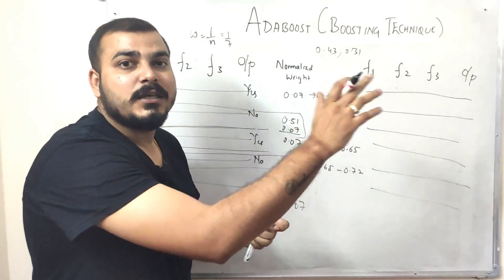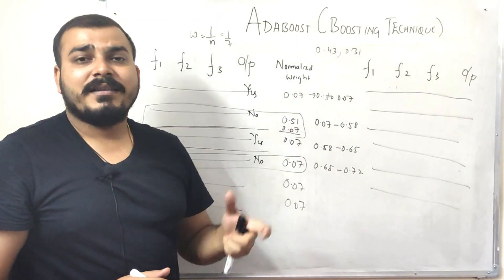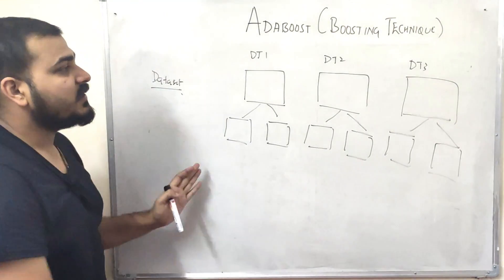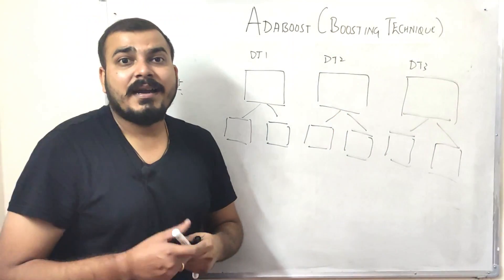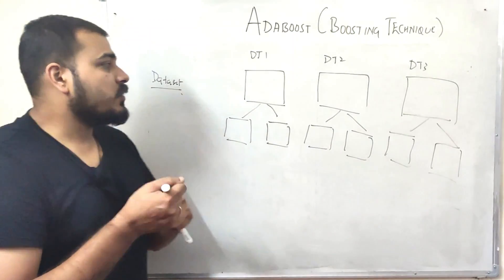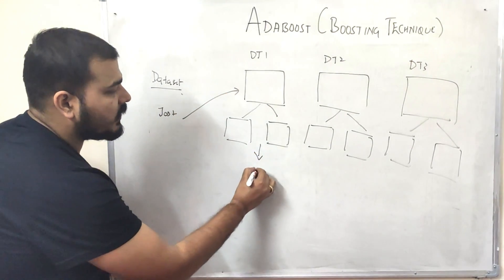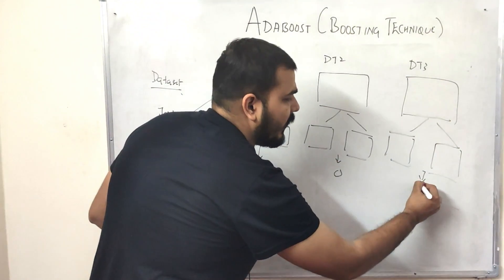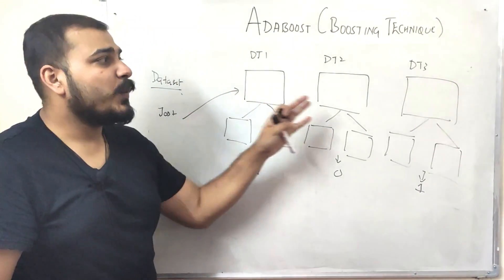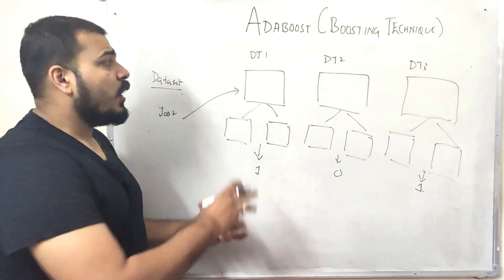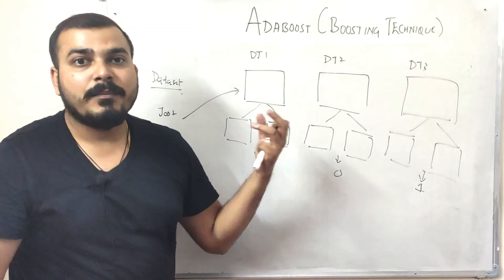This process continues until all sequential decision trees are traversed, with error reducing at each stage. For test data classification, the test record passes through decision tree 1, decision tree 2, decision tree 3 — all stumps — and the final output is determined by majority voting among the stumps, similar to how random forest works. In this way, AdaBoost combines multiple weak learners to create a strong learner.